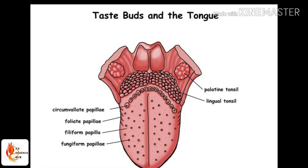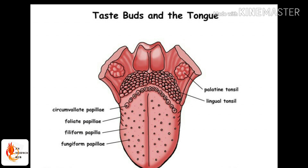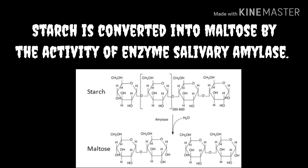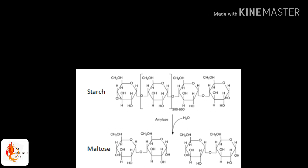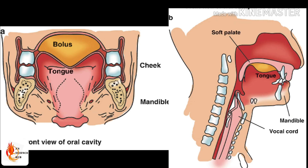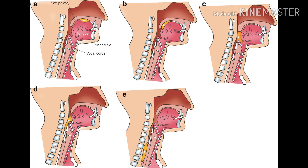There are three pairs of salivary glands responsible for secreting saliva. The tongue is a muscular structure with receptors for identifying taste; it also helps mix food with saliva. Saliva contains the enzyme salivary amylase, which converts starch into maltose — so the complex carbohydrate (polysaccharide) is turned into maltose (a disaccharide). The partially digested food is formed into a bolus and pushed to the posterior part of the buccal cavity.